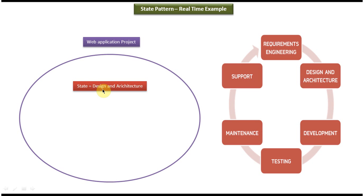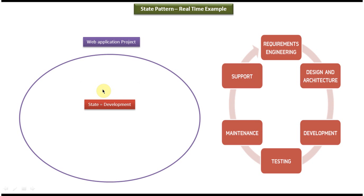So once the design and architecture state is finished, it will be moved to the development state. Now the project state is the development phase. In the development phase, what we can do is we can do coding and unit testing, but we cannot do support, maintenance, or requirement gathering in this state.